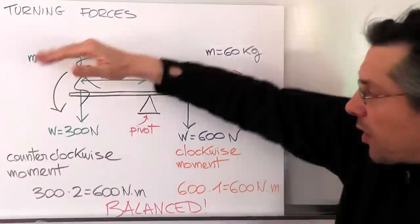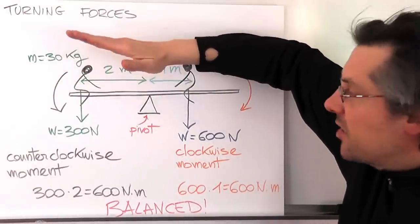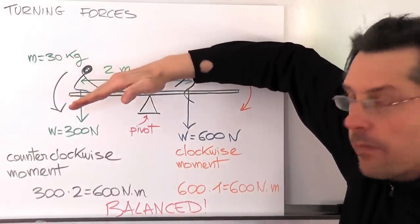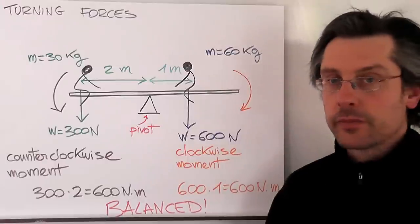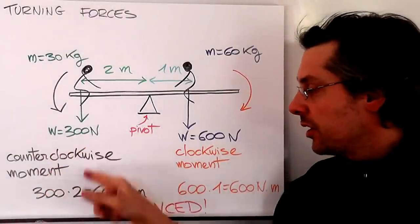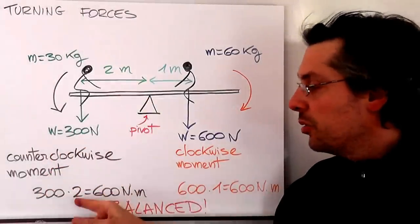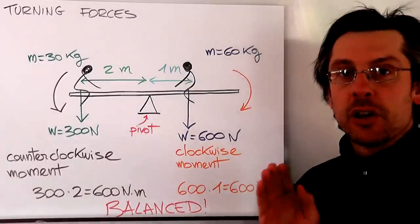And why counterclockwise? Because if we had this kid alone, the seesaw will move like this in a counterclockwise direction. And the counterclockwise moment is 300 times 2, that makes 600 Newton per meter.